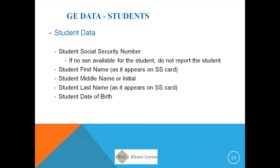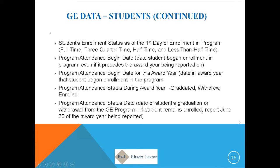Next is the student data category, probably the largest category of information particular to the student. It will include the student's social security number, complete name, and date of birth. These four data points are what the department will use to obtain earnings mean and median information for the cohort of completers when calculating the debt-to-earnings ratios, making this element vital to the process.